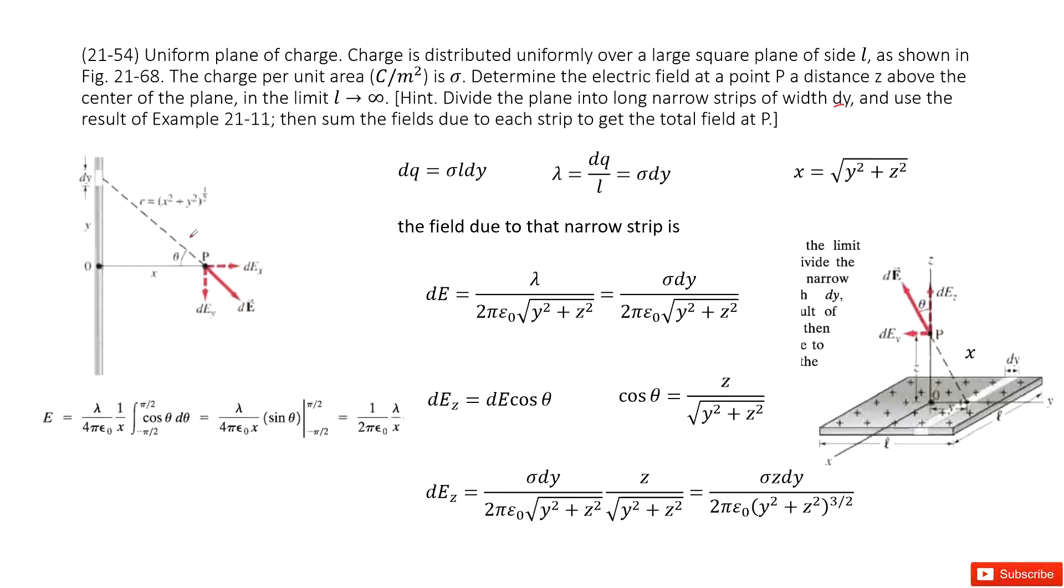In example 11, it tells you you have the unlimited wire charged, and then find the electric field a distance x above it.